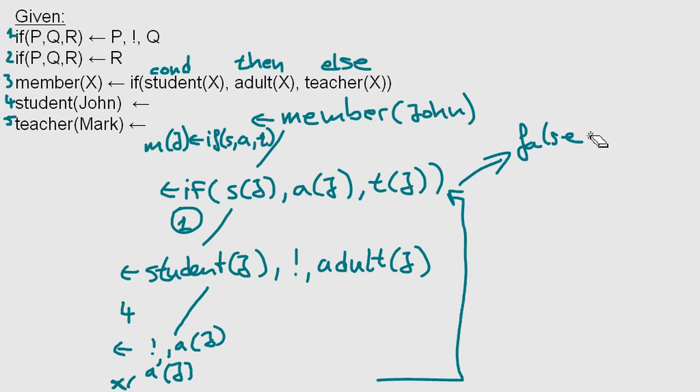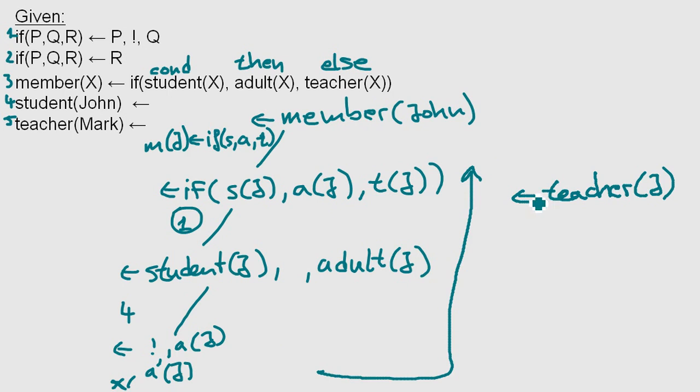Now let's imagine if we would have not used this operator. Of course, we would have backtracked until here. We would have chosen this rule. And we would have ended up with John being a teacher, which also does not return anything good, but is definitely wrong.